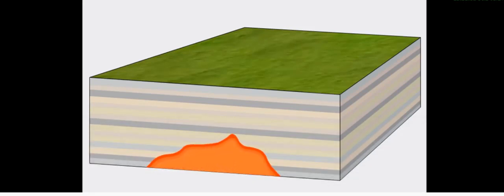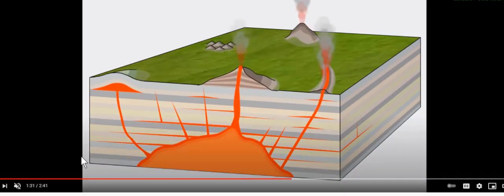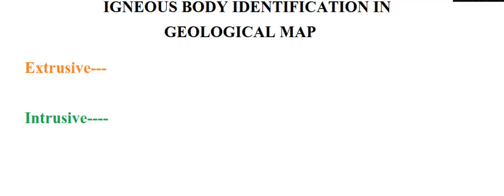Intrusive types include sill, laccolith, batholith, and dyke. All these landforms are developed from magma, which is known on the earth's surface as lava. This type of magma is injected along the bedding plane, and some are injected across the plane. This difference creates different features in the geological map.